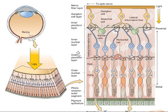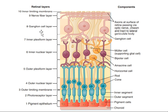So the 10 layers from outer to inner are: pigment epithelium, photoreceptor layer, outer nuclear layer, outer plexiform layer, inner nuclear layer, inner plexiform layer, ganglionic cell layer, and nerve fiber layer. The ganglion cells form nerve fibers, and the optic nerve is formed by joining all those nerve fibers here.